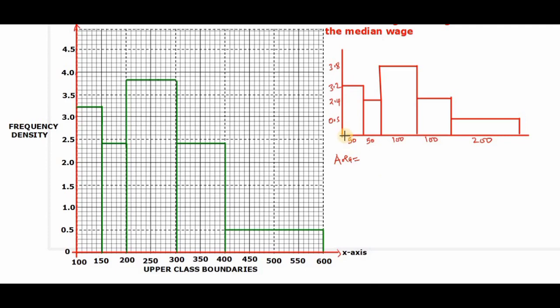So for the first bar, we have the rectangular shape. So we have length by width, that is 3.2 by 50, and that gives us 160. For the second bar, we have 50 by 2.4, that is 120.